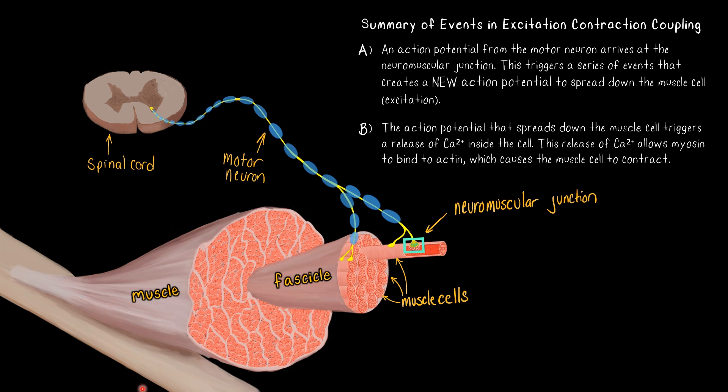So even though you don't need to understand action potentials 100% of the way in order to understand how this process works, you do need to have some kind of a concept for the mechanics behind what is actually happening during an action potential for it to make sense. So we're going to start by just reviewing the bare minimum about action potentials by looking at one little section of a motor neuron a little bit more closely.